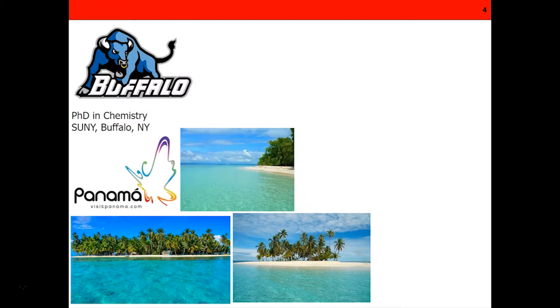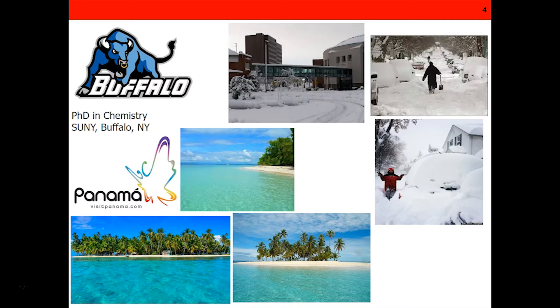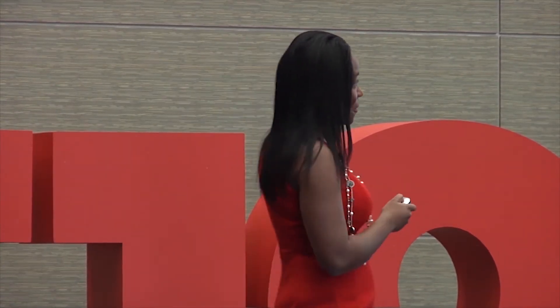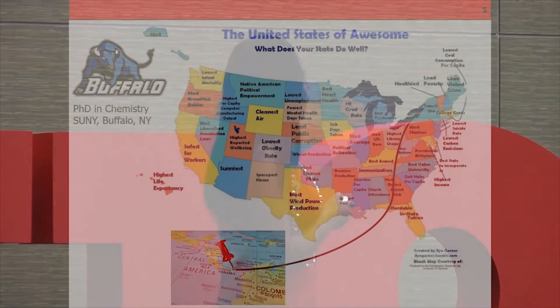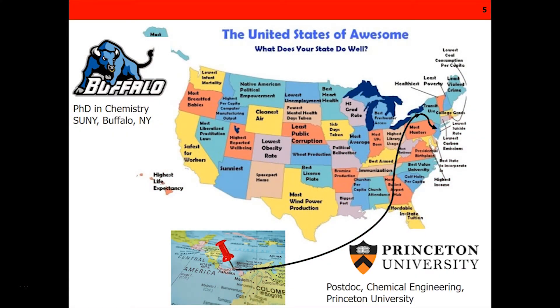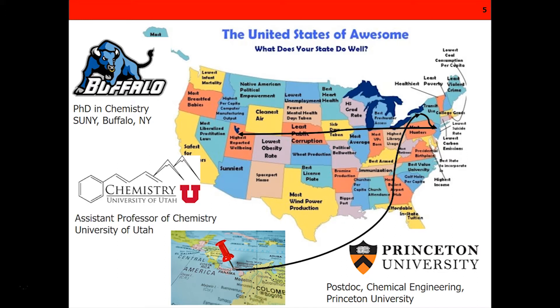I left Panama that has really good beaches for the snow in Buffalo. It was a big change for me in terms of weather. I was actually cold in July, so imagine how much I suffered in December. Coming back to the map, I went southeast to Princeton University where I got my postdoc, and then after that I went to the state of highest reported well-being, which is Utah, where I'm currently an assistant professor of chemistry.